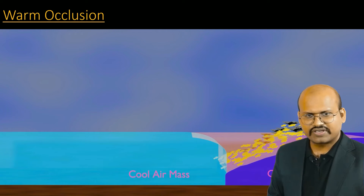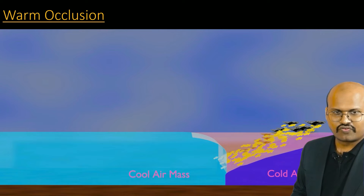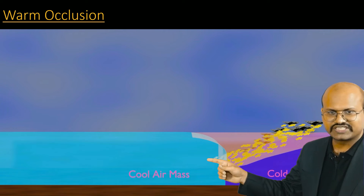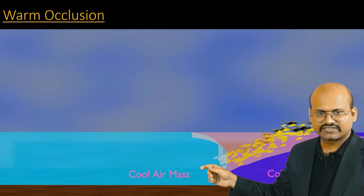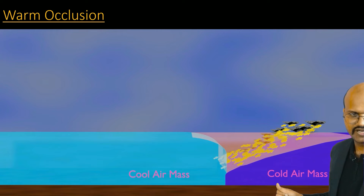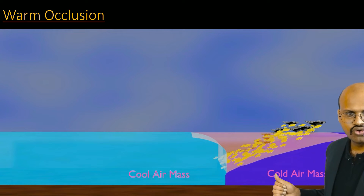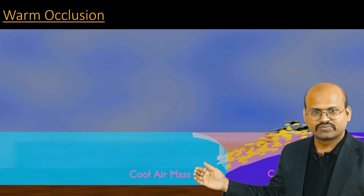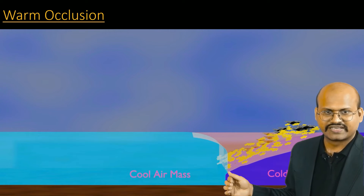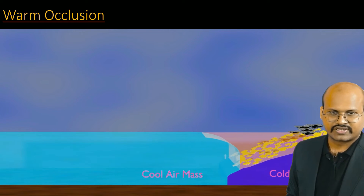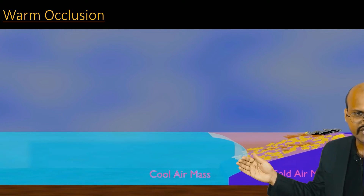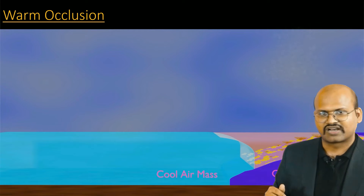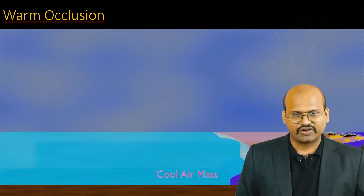At the juncture where the warm air is completely uplifted, we see that the cool air mass comes in contact with the cold air mass. But the cold air mass is heavier, so when the cool air mass moves further it gets uplifted. Here we see that the cool air mass is moving up and gentle clouds are formed like those at the warm front.